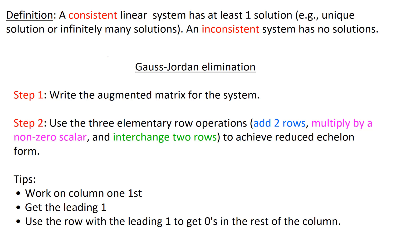For Gauss-Jordan elimination, there are really two steps. The first step is to write the augmented matrix for the system. Step two is to use the three elementary row operations: you can add two rows, you could multiply a row by a nonzero scalar, or you could interchange two rows. Use any of those three elementary row operations to achieve reduced row echelon form.